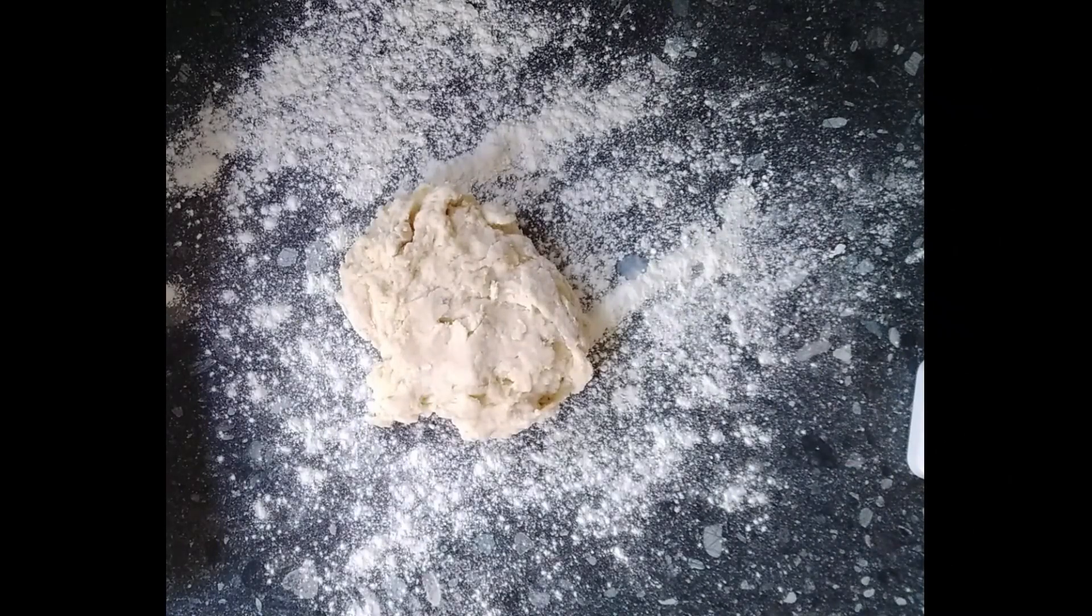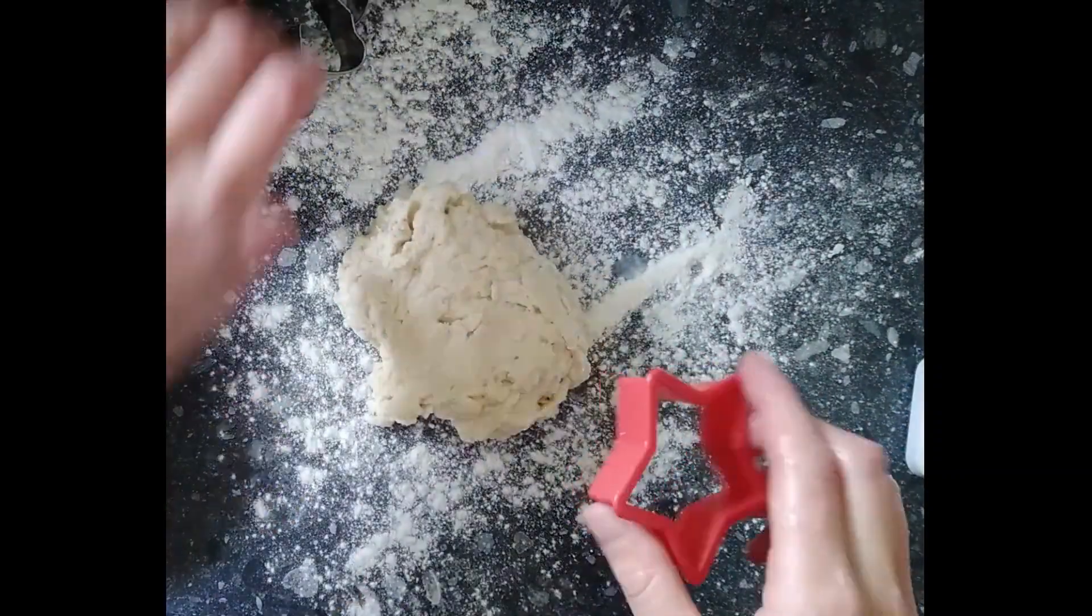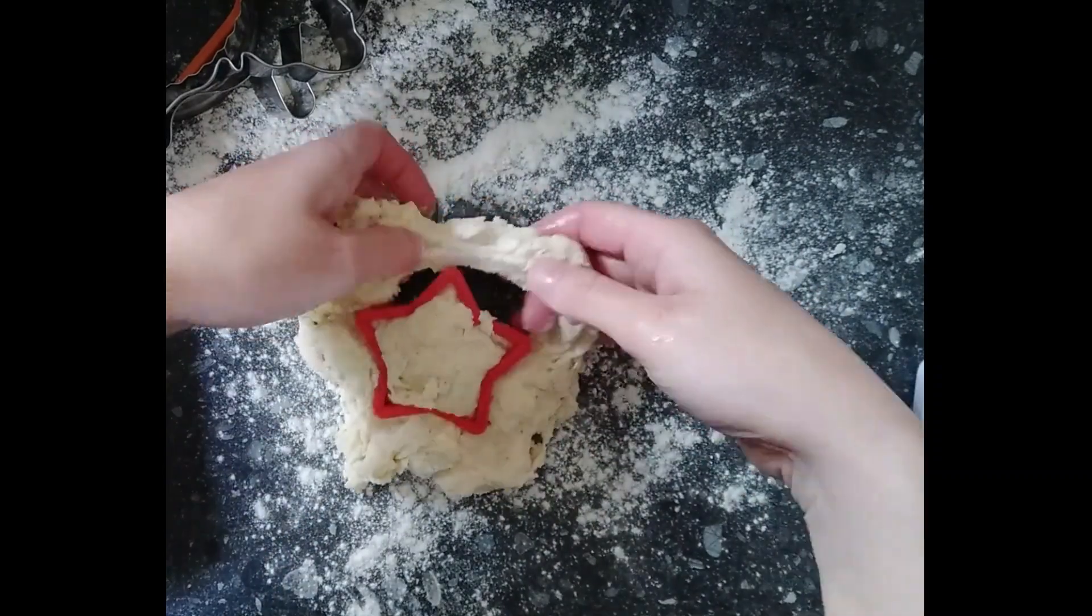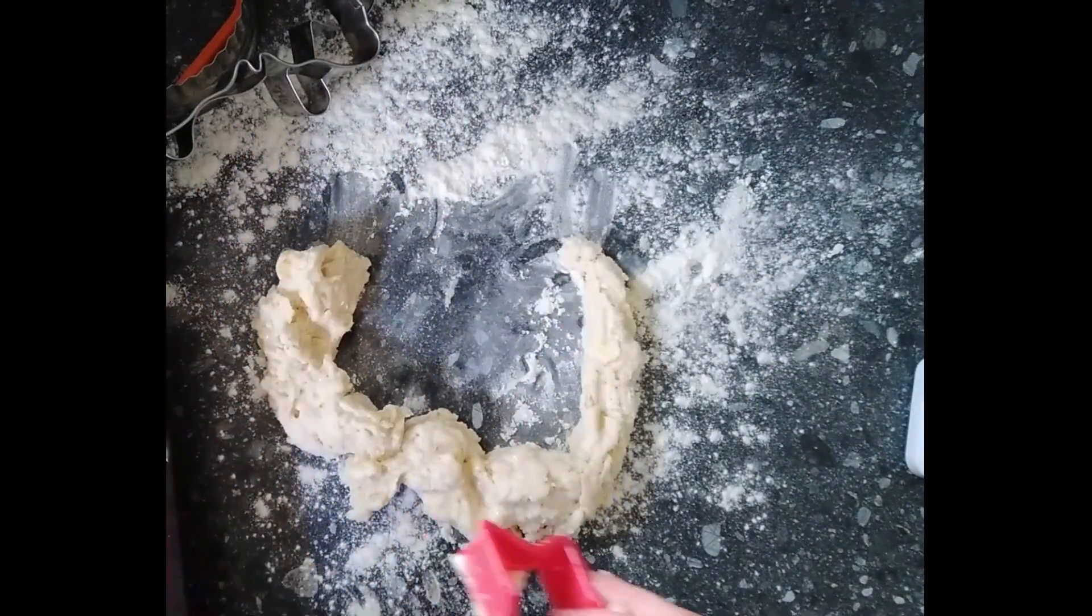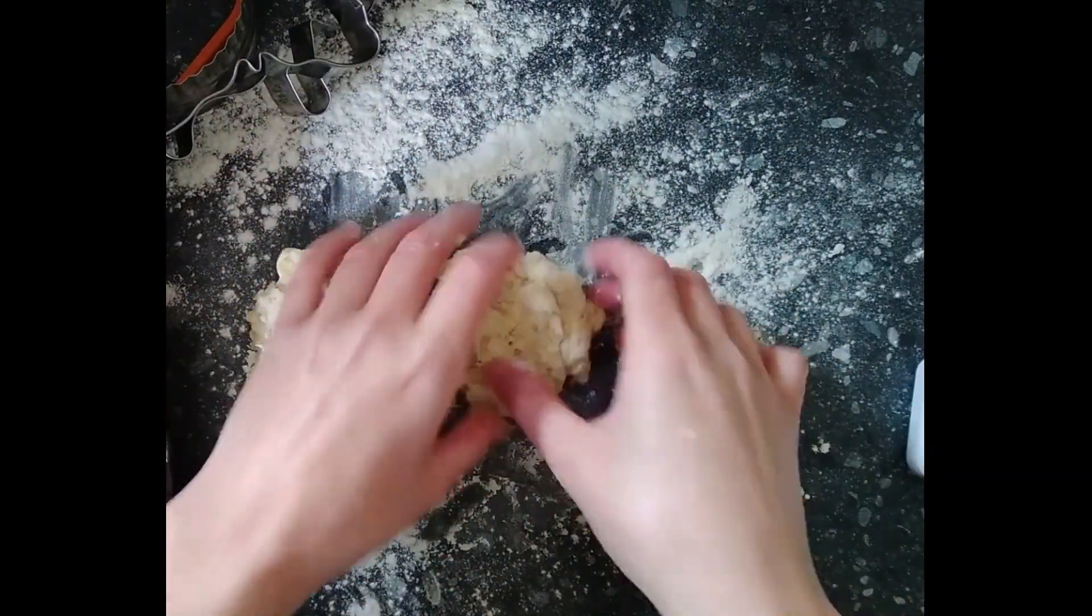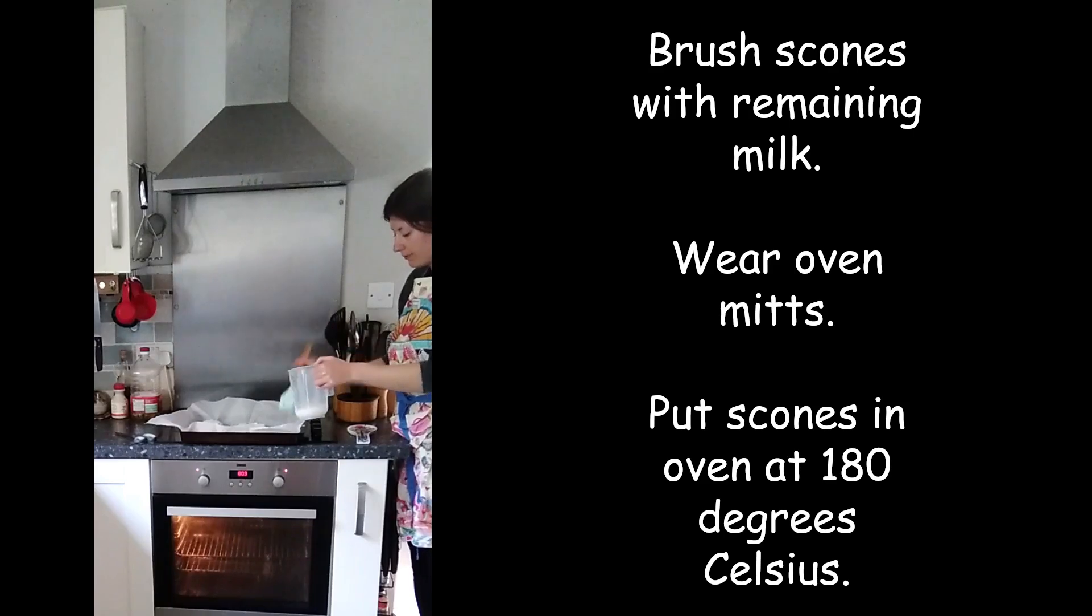Now lightly flour a work surface and put some dough on it. You can use a rolling pin but you don't really need to for scones because they're not that thin. Just grab some of the dough and put it on the lightly floured work surface. Now cut out some scones in whatever shape you choose and put on a tray that has greaseproof paper on it, and then brush with the remaining milk.